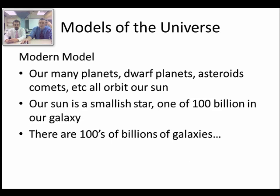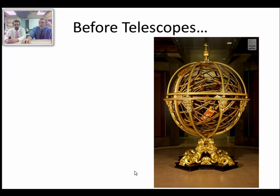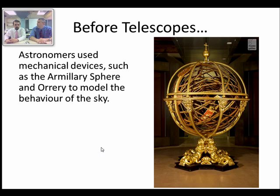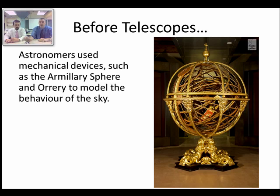Before telescopes were widely used, people used mechanical devices to map the stars and the motions of planets, the Sun, and the Moon. One of these is called an armillary sphere — there's a picture of a beautiful one here that stands about nine feet tall. It's circles inside of circles, and they all move so you can map and plot positions of things, do calculations, figure out where planets would be at certain times, and predict eclipses.